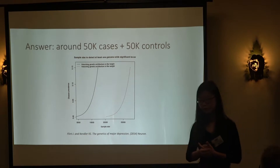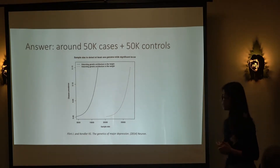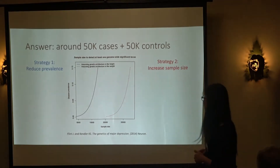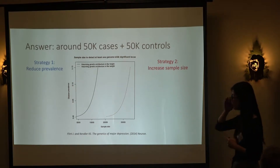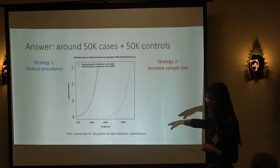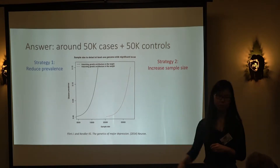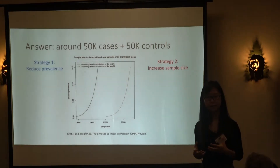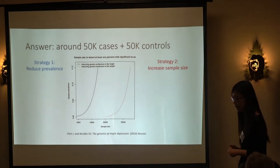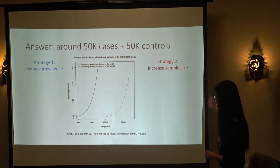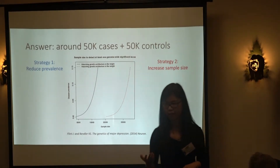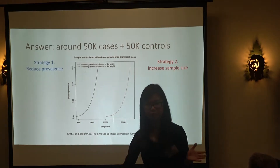At that point in 2014, 50,000 cases and 50,000 controls seemed like an prohibitive number — nobody had that research budget. So two potential solutions were proposed: one, reduce prevalence by only collecting the most severe cases, which increases statistical power for GWAS; or two, find some way to get that many samples, potentially through interesting phenotyping techniques at lower cost.